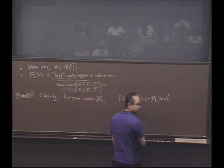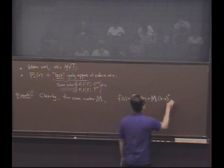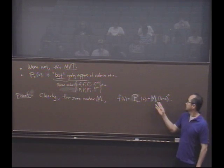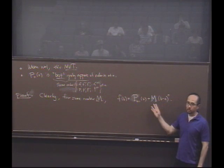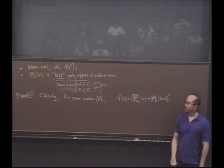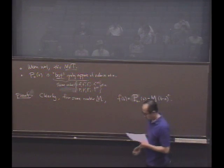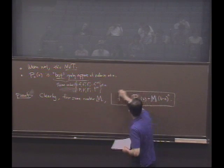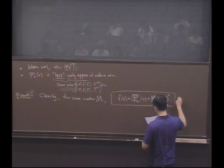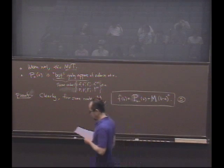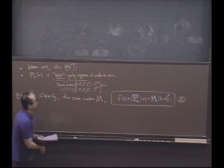And for some suitable choice of m, this statement is true. I didn't say anything with any deep content. Number equals number plus something times number. You can solve for something. So clearly, for some number m, this is true. I'm going to refer to this equation as cyclops smiling.